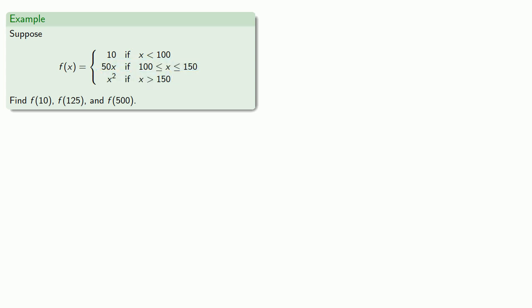We can still try to find function values as we have before. So for f(10), we have x equal to 10, and so this means we'll use the formula for x less than 100. One way of looking at it is that for this particular value of x, these other two lines don't exist and our function is just 10. So f(10) is equal to 10.